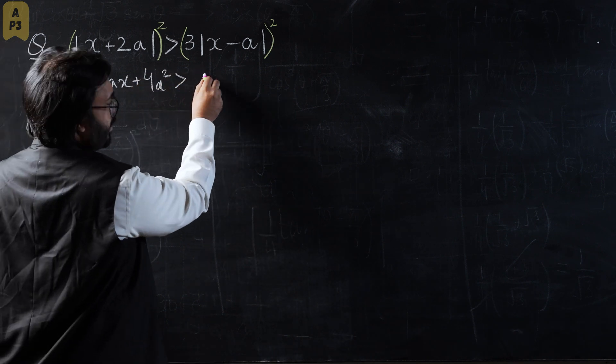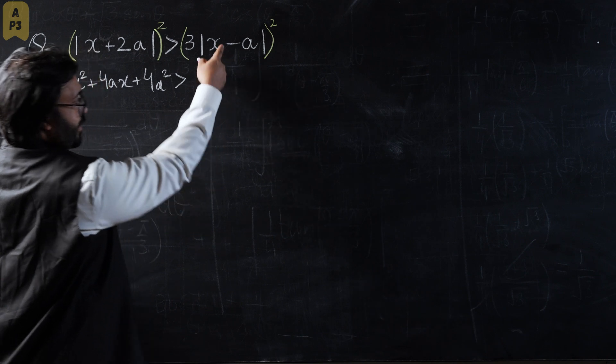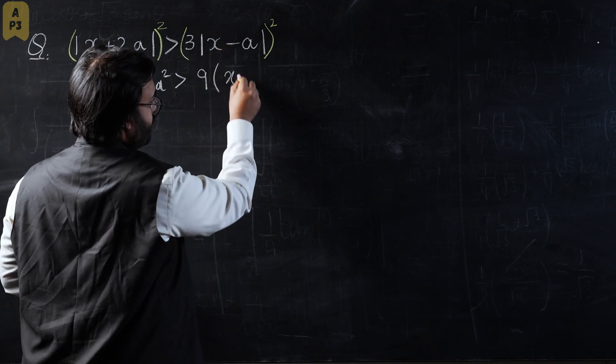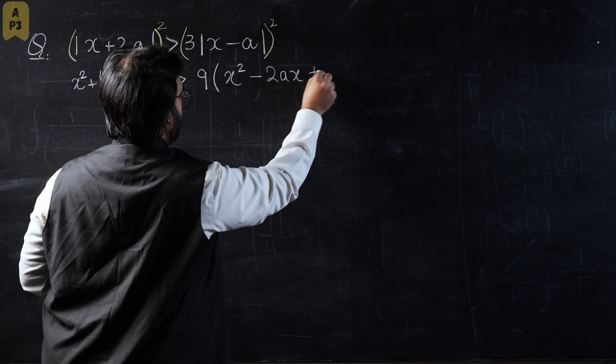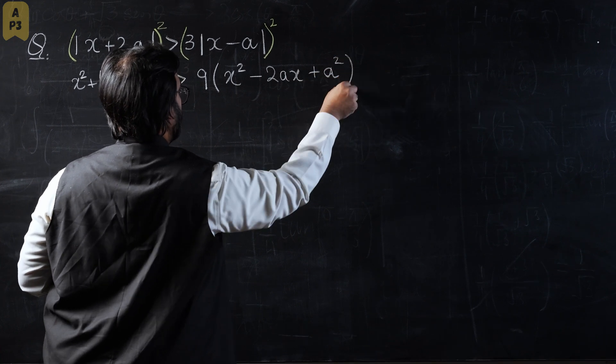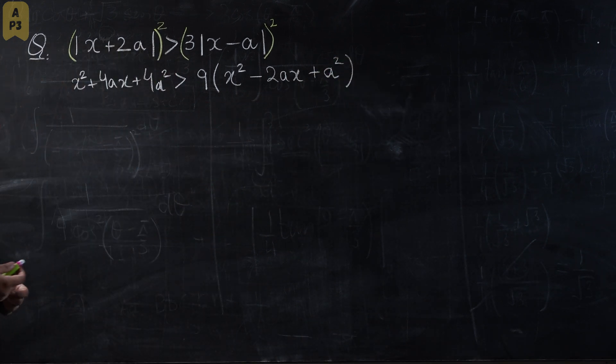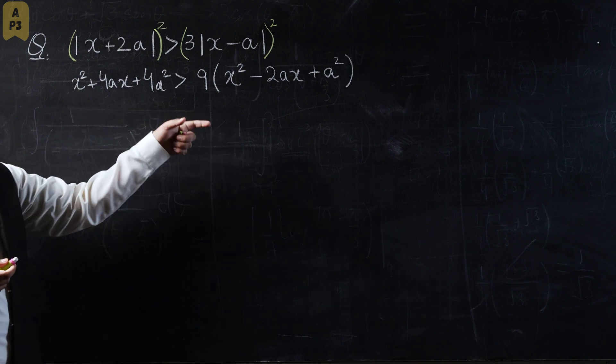So it will open as x squared plus 4ax plus 4a squared. This would be greater than three squared, which is nine. Let's open this square: x squared minus 2ax plus a squared.